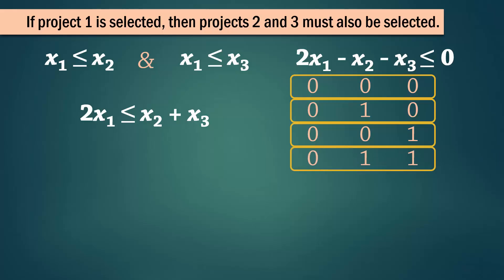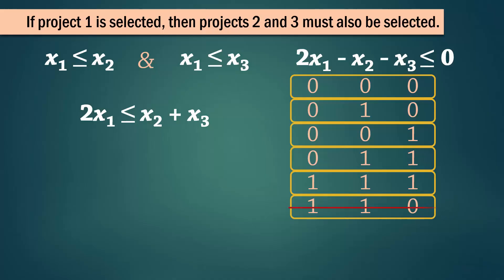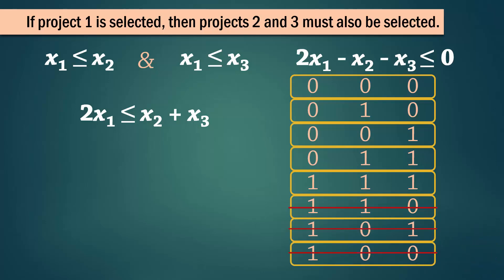Or both projects 2 and 3 without project 1. And we can have project 1 as long as we have both 2 and 3. We can't have project 1 with only project 2, we can't have it with only project 3, and we can't have it by itself.